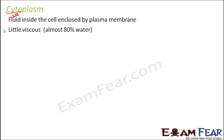Cytoplasm's composition is almost 80% water, and since it has more water, its viscosity is less. For example, think of honey versus water — honey is more sticky, and this stickiness is a measure of viscosity. The more sticky the fluid, the more viscous it is. So honey is very viscous compared to water, and cytoplasm is less viscous because it has more water.